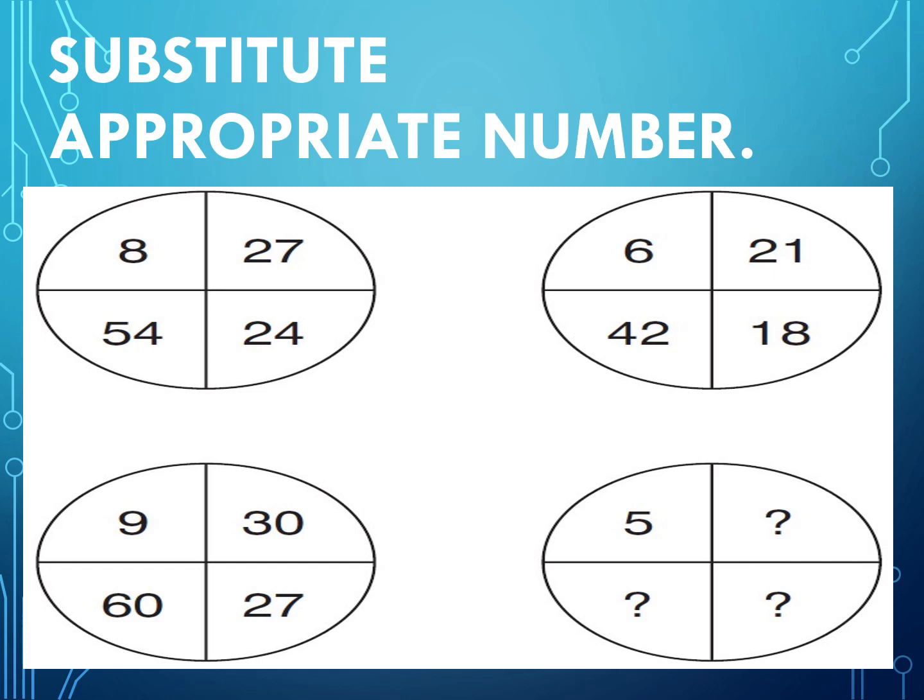So first circle, I can notice 8 times 3, 8 multiplied by 3 is 24. So quickly we can write 5 multiplied by 3 is 15, so one column filled up. Next, from here, again check: 24 becomes 27. So 24 becomes 27 means we add 3 here, so I will add 3 to get this number, so it is 18.